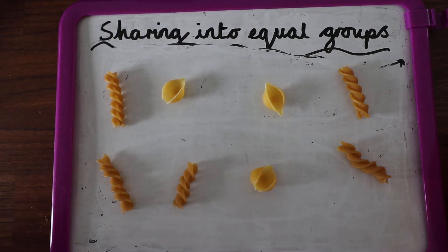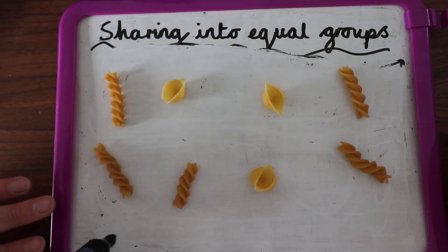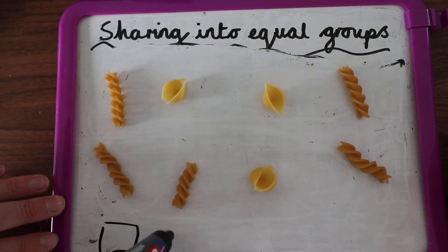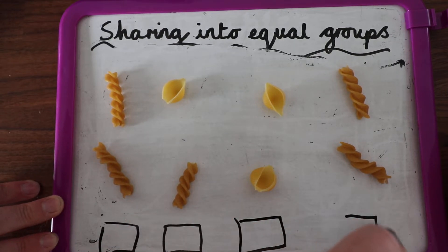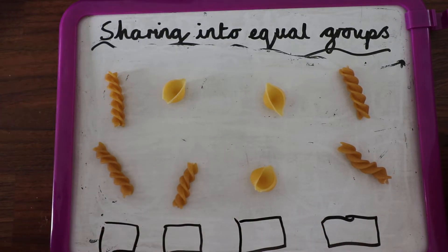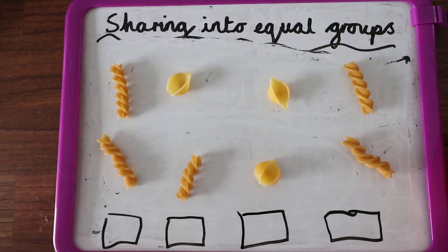I want to share eight. I've got eight. I want to share eight into four groups. These are my boxes. I want to put pasta in each, an equal amount in each group. Have a go. What would you do?